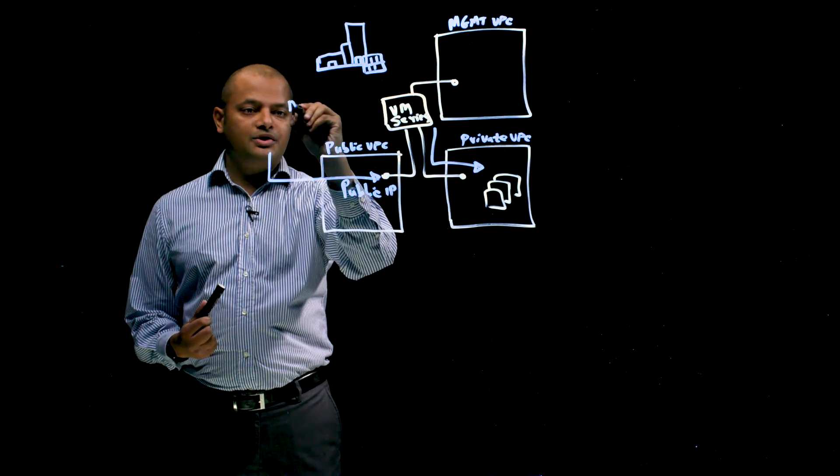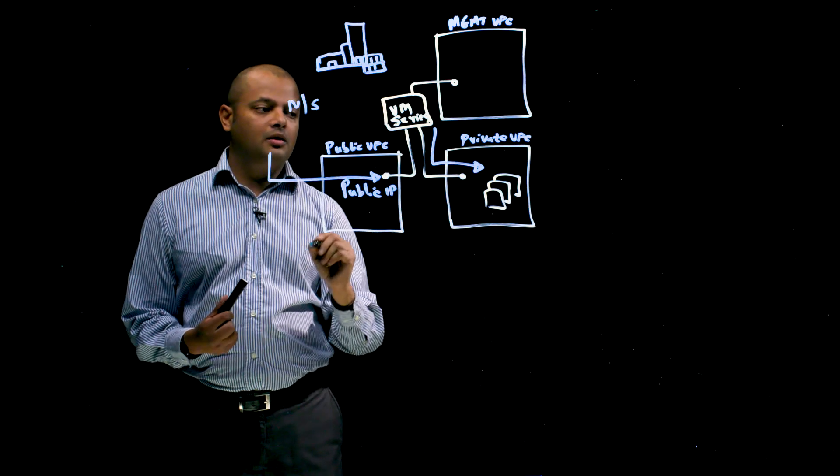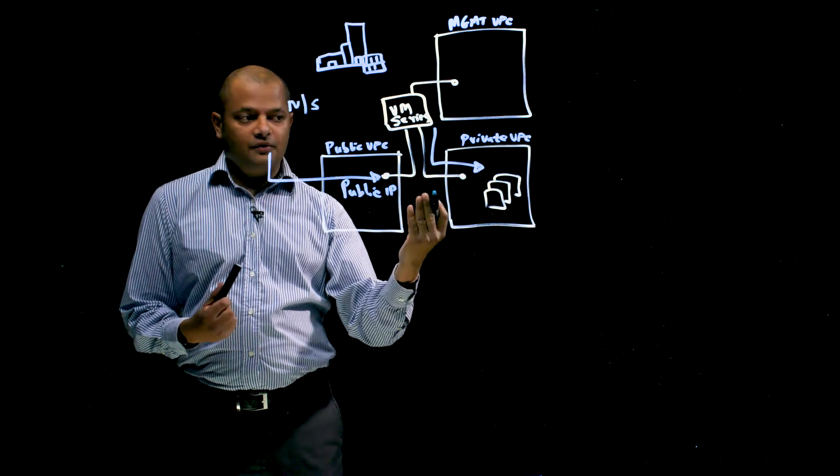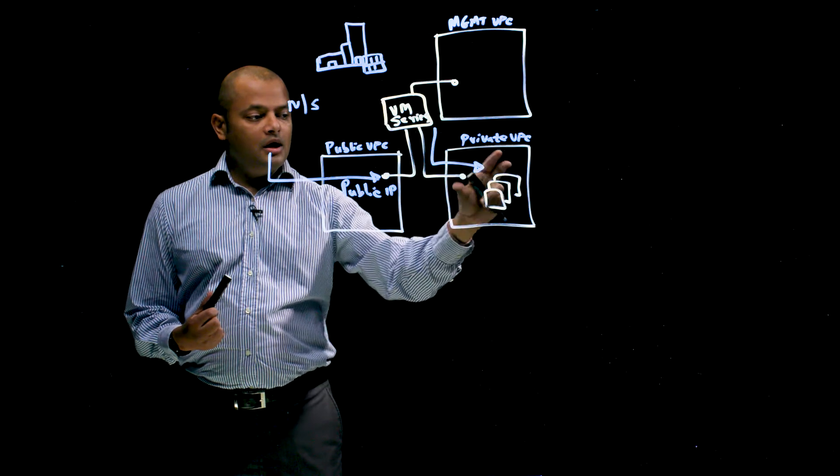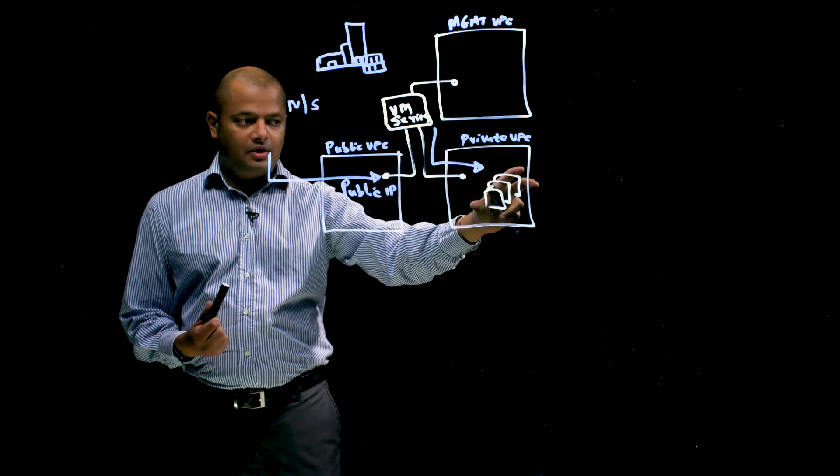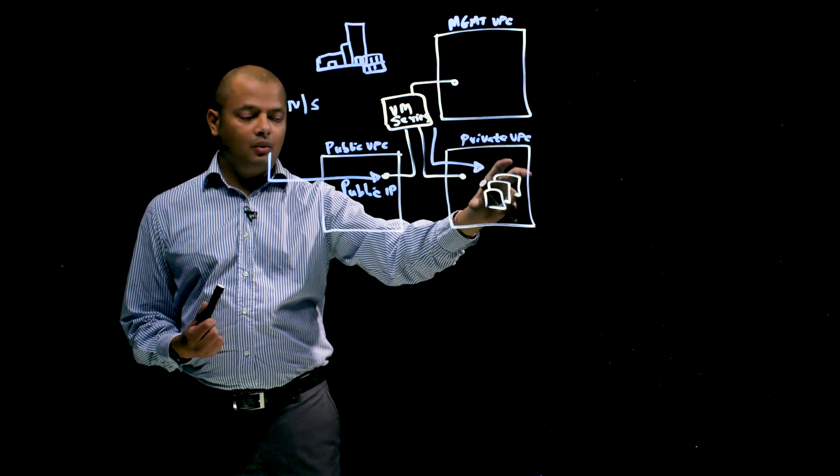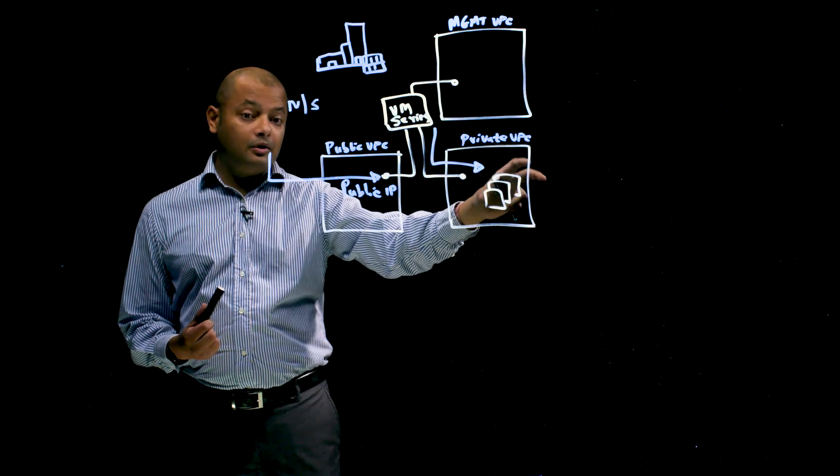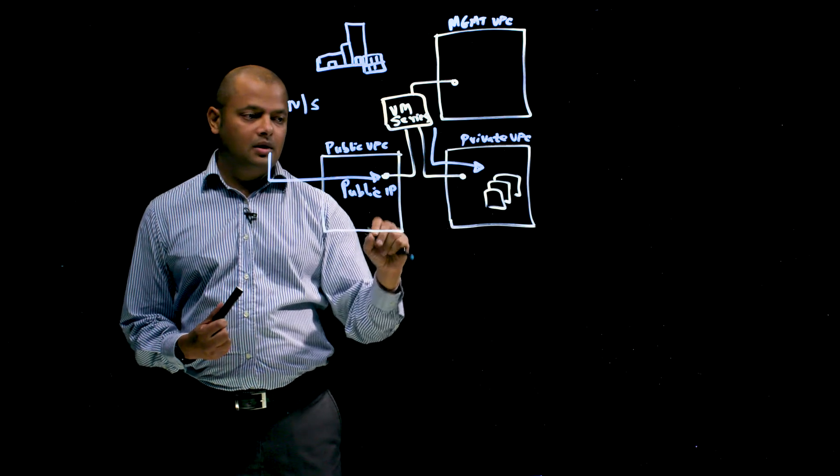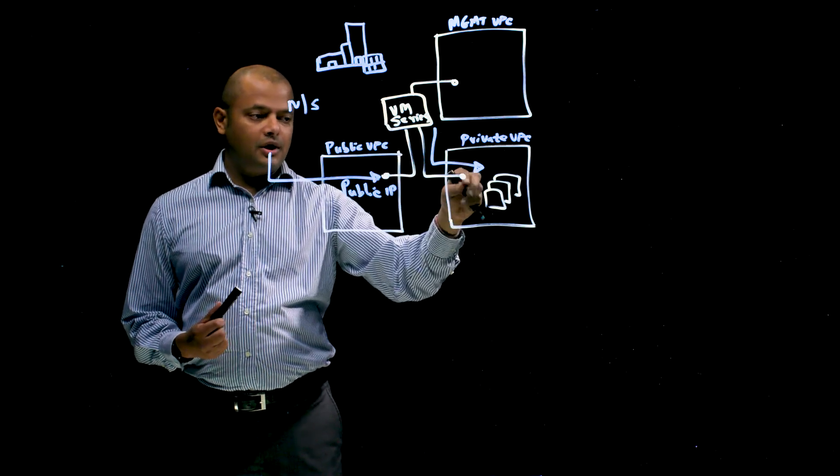And the application will obviously process that traffic and then return back the traffic. So VM series is in the traffic path protecting that traffic coming in and going out. So that is sort of the north-south aspect of traffic coming in and going out. And the intention of this deployment is that if you've got web servers, for example, an Apache Struts web server running here, you're using the VM series to protect yourself against known vulnerabilities that you've not been able to patch yet on your deployments.